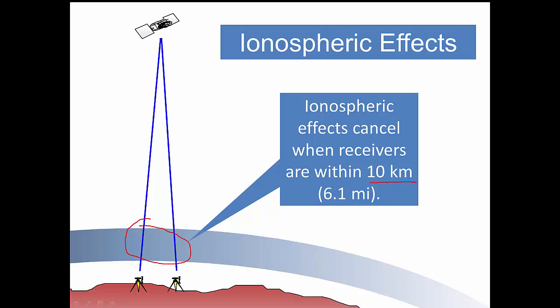However, the ionosphere is not uniform. As the two receivers get farther apart, then the ionospheric errors over here are going to be different from what they were over on the left side of the figure.